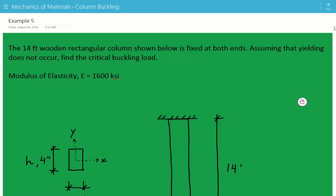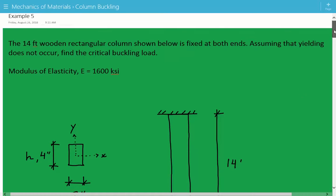Hey everybody, this is example number 5 for mechanics of materials covering column buckling. The problem statement is: the 14 feet wooden rectangular column shown below is fixed at both ends. Assuming that yielding does not occur, find the critical buckling load. The modulus of elasticity for the wood is E = 1600 KSI.